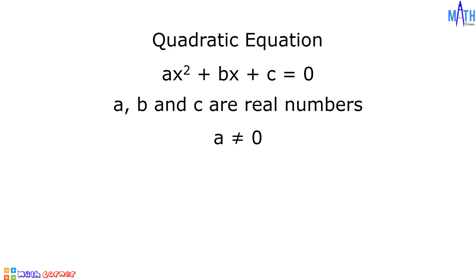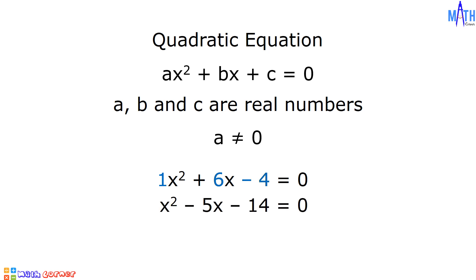An example of a quadratic equation is x squared plus 6x minus 4 is equal to 0, where a is equal to 1, b is equal to 6, and c is equal to negative 4. Another example: x squared minus 5x minus 14 is equal to 0, and another: 3x squared minus 5x plus 2 is equal to 0. Let us solve these three quadratic equations by completing the square.